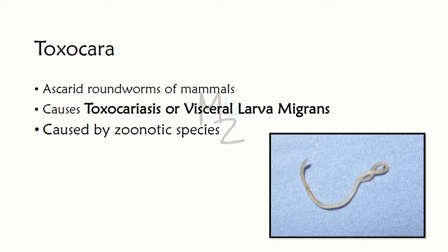The first is Toxocara, a roundworm of mammals responsible for causing toxocariasis or Visceral Larva Migrans (VLM). It is caused by zoonotic species. Zoonosis is infection that spreads from animals to humans. In this picture you can visualize Toxocara canis.